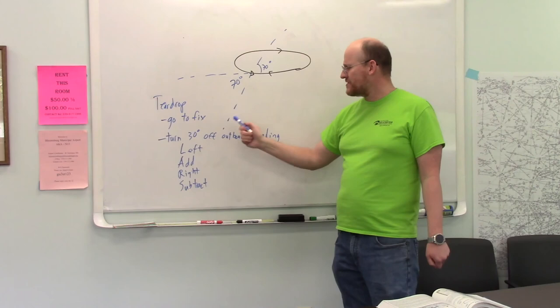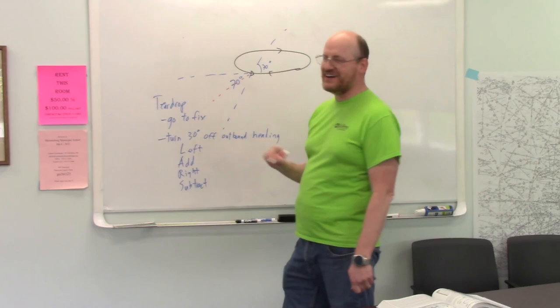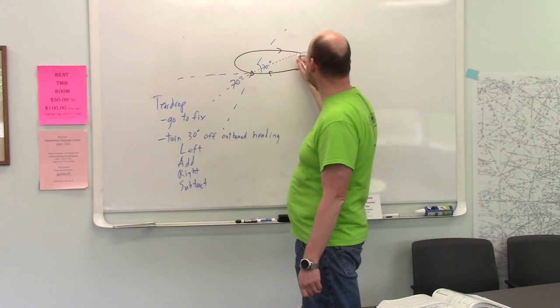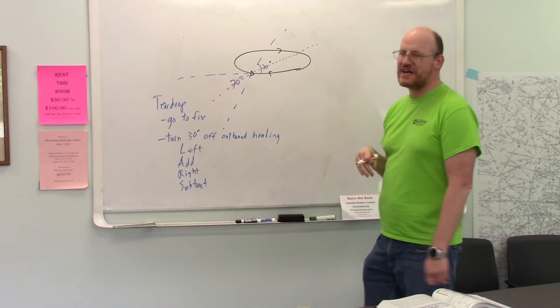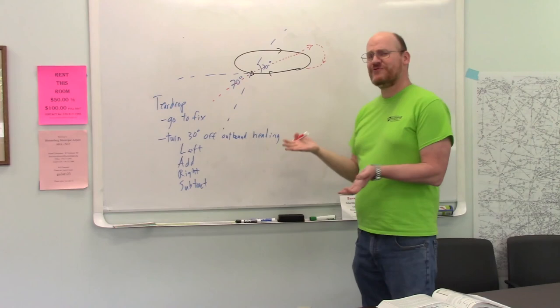So in this case, my outbound heading was 90. It's a right pattern. So I'm going to subtract 30 from 90. So I will fly a heading. Let's say I'm coming in from here. And I'm going to fly a heading of 90 minus 30 or 60 degrees. So I'm going to fly a heading of 60 degrees. And then once I've flown out for a minute or so, I will turn to the right. Intercept this course. So a teardrop.